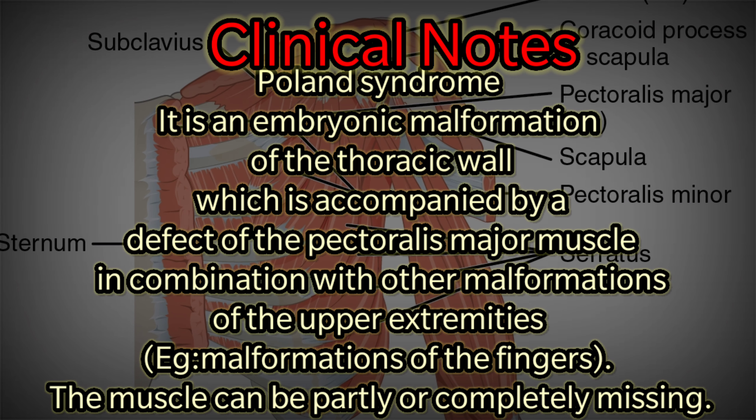Clinical notes — Poland syndrome: Poland syndrome is an embryonic malformation of the thoracic wall accompanied by a defect of the pectoralis major muscle, in combination with other malformations of the upper extremity, such as malformations of the fingers. The muscle can be partly or completely missing. Thank you, have a nice day.